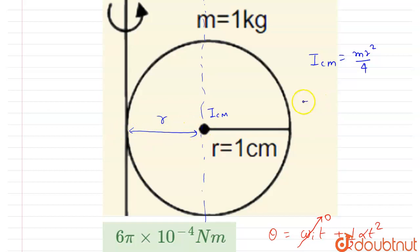AB equals I_cm plus md squared, where d is r, you could see here. So I will write mr squared by 4 plus mr squared. So I here, we got 5 by 4 mr squared. So we have